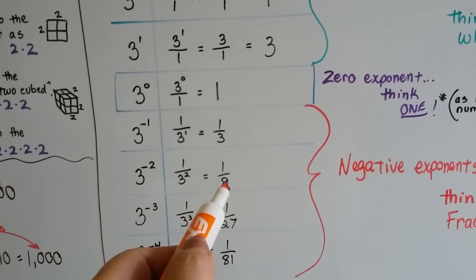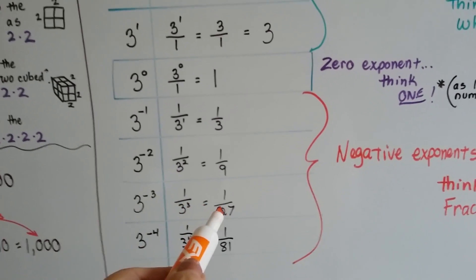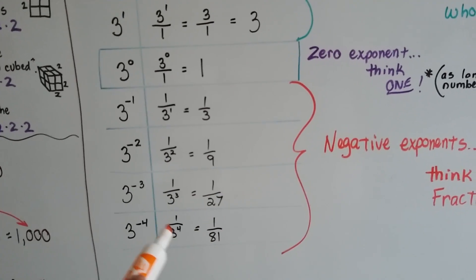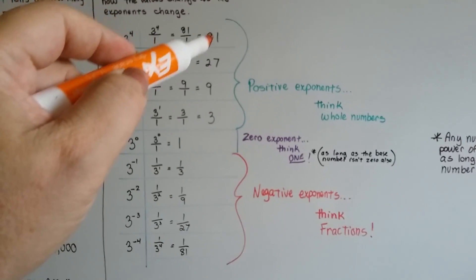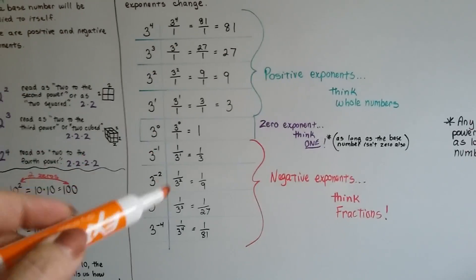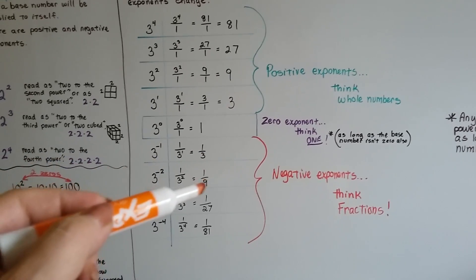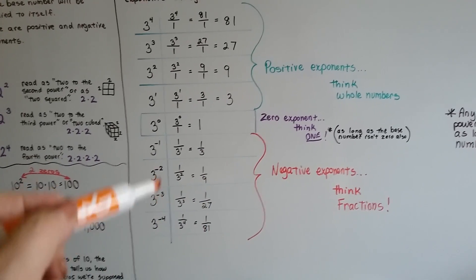So, this becomes 1/9th. This becomes 1/27th. And this becomes 1/81st. Just like these were 81 and 27 and 9 and 3 up here, that's what the denominators are as their negatives.